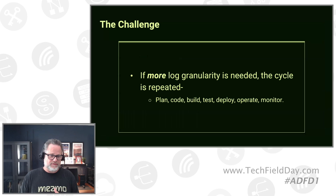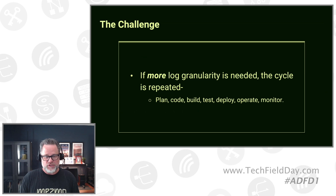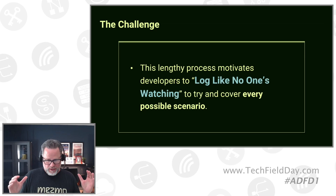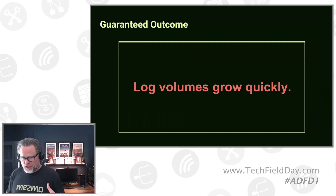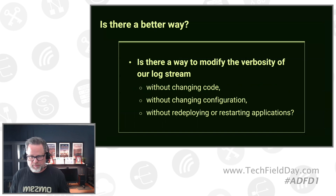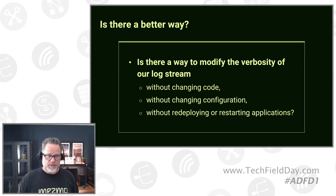If we then determine we don't have enough information to effectively troubleshoot an issue, we have to repeat that long cycle again. This lack of ability to easily make changes leads to the idea that motivates developers to log like no one's watching and try to cover every possible scenario from the get-go. Because of this, log volumes grow quickly. That brings us to the question: is there a better way to modify the verbosity of our log stream without changing code, without changing configuration, and certainly without redeploying or restarting our applications?